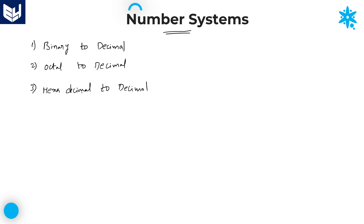First one is binary to decimal. Let us take any binary number — here it is 101011. This is a number, and the base value is very important. Unless you mention the base value, you cannot say exactly whether it belongs to the decimal, binary, octal, or hexadecimal number system.